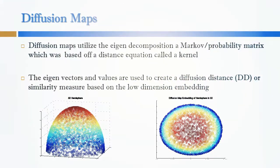Diffusion maps utilizes the eigen decomposition of the probability matrix which is based on the distance equation called a kernel. The eigenvalues and vectors are used to create a diffusion distance or similarity measure based on the low dimensional embedding.